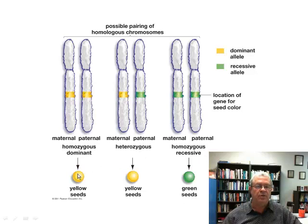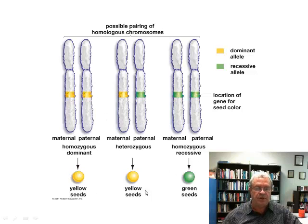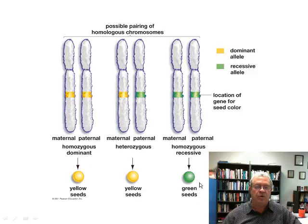Two of these genotypes produce yellow seeds, and one produces green seeds. What do you call what you can actually see — not the genotype, you can't see that. What you can see is called the phenotype. So two of these genotypes produce the same phenotype, yellow seeds, and one of these genotypes produces the phenotype, green seeds.